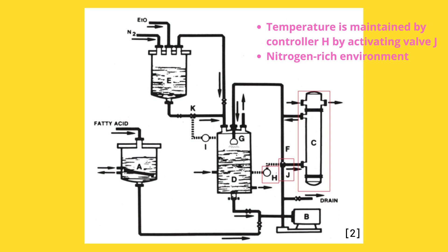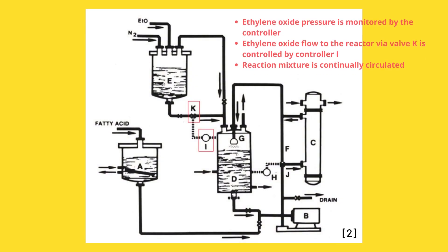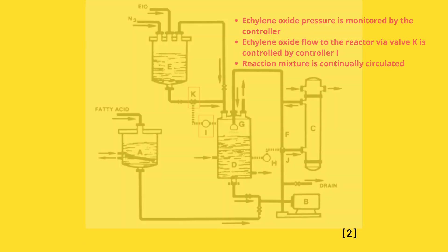The entire reaction takes place in a nitrogen-rich environment. Controller I monitors the ethylene oxide pressure and controls the flow of ethylene oxide to the reactor through valve K. During the ethylene oxide addition and afterwards, the reaction mixture is continually circulated to ensure that all of the absorbed epoxide is reacted.